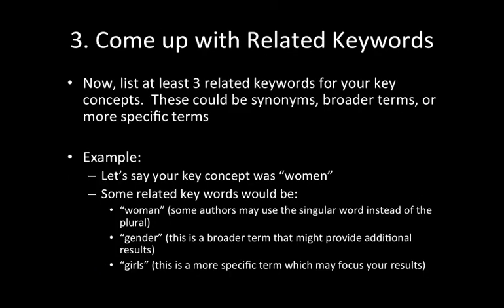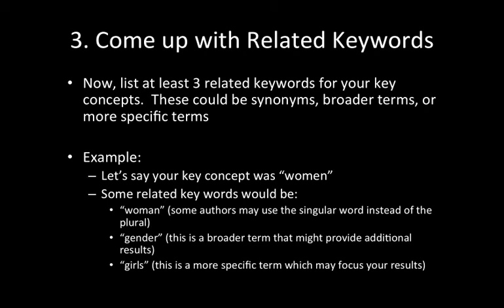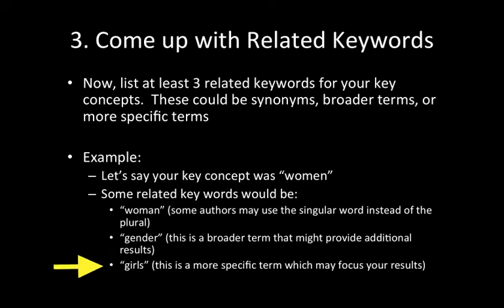Now we're going to come up with related keywords. These could be synonyms, broader terms, or more specific terms. Listing related keywords helps us to broaden our search so that we can find more results related to our topic. For example, if your key concept was women, some related keywords would be woman — the singular word — gender — a broader term — and girls — a more specific term.